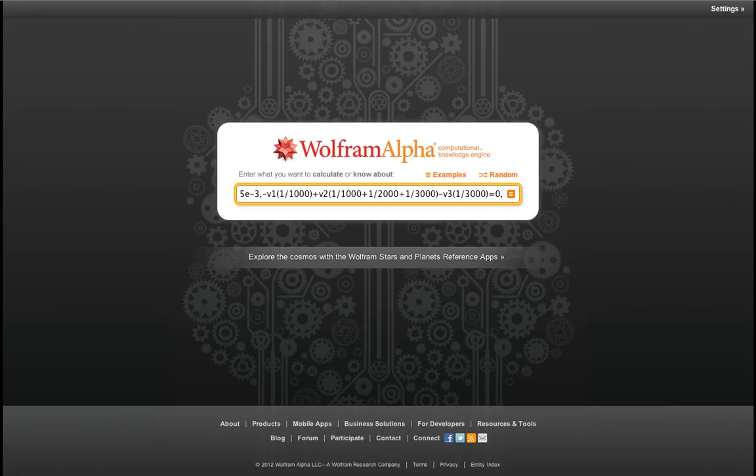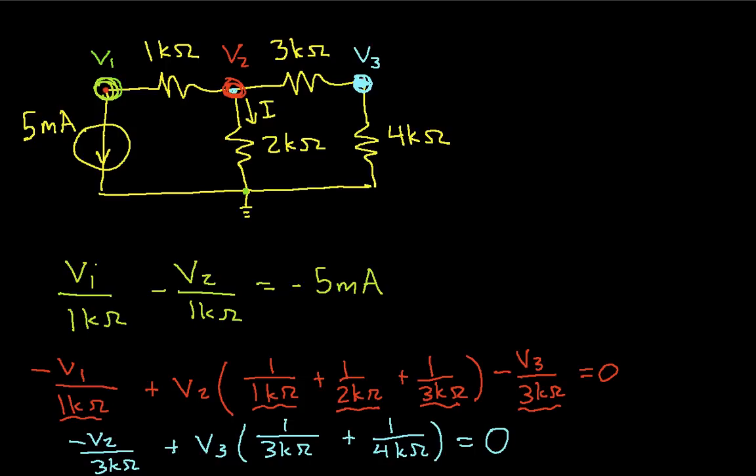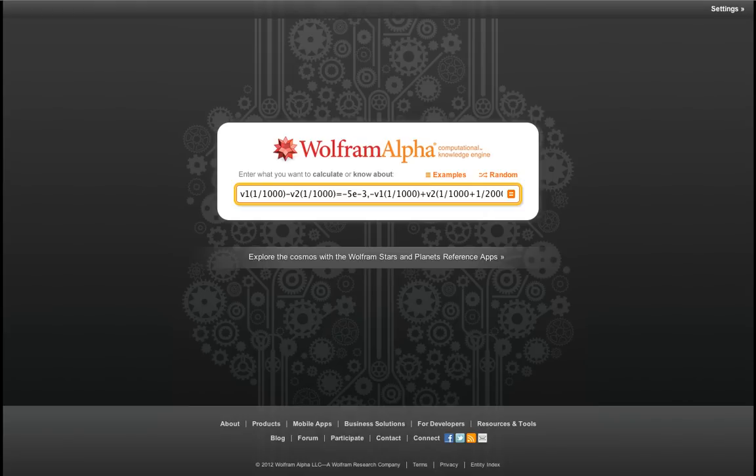Let's go back and see what our last equation is. We have the minus v2 over 3k ohms plus v3 times the stuff. So we have minus v2, 1 over 3k ohms plus v3 over 3k ohms plus 1 over 4k ohms. And this is equal to 0.